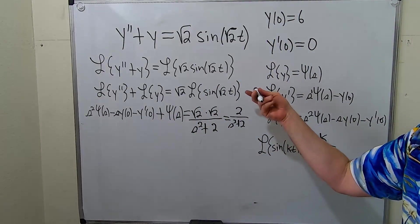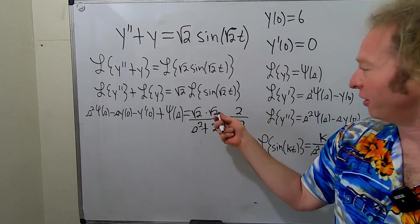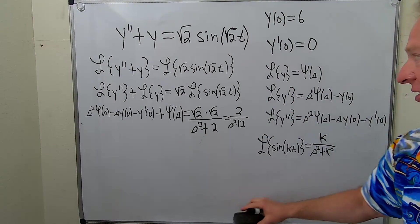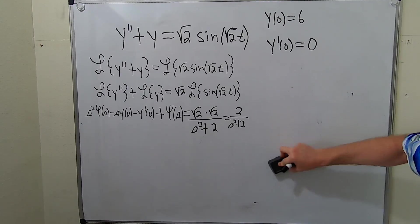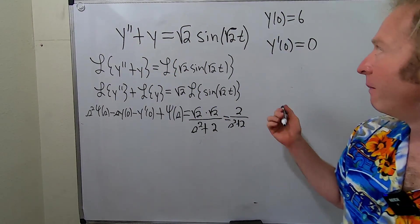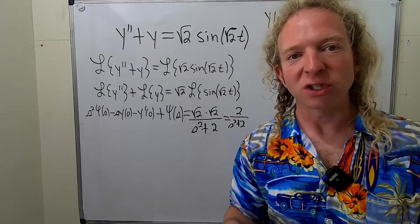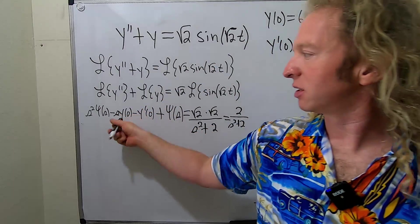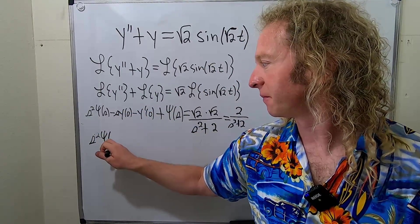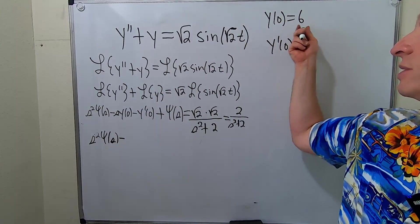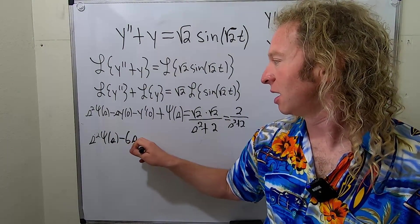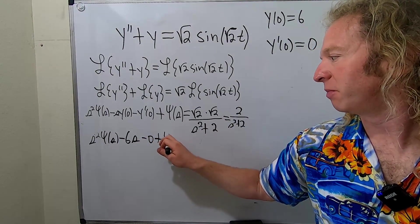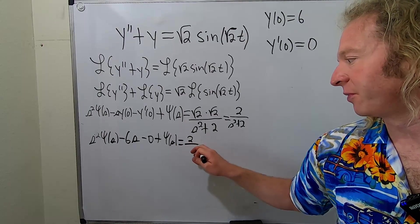It's probably on purpose — whoever made this problem decided to put that there so when you multiply them you get 2. Now I'm going to erase all of this and keep going. So we take the Laplace, we use those formulas, and now we use our initial conditions — you use them early in the problem, which is very different from other differential equations. So y of 0 is 6, meaning this is s squared pitchfork y of s minus 6s, minus y prime of 0 which is 0. Plus pitchfork y of s. And that's equal to 2 over s squared plus 2.